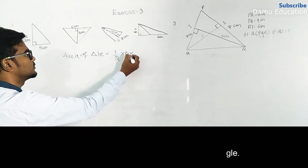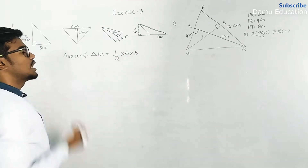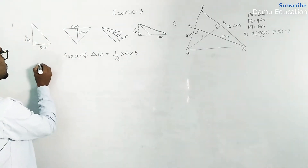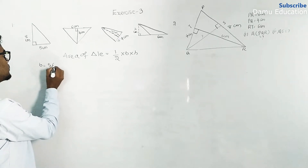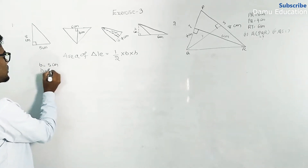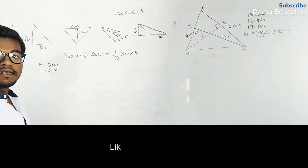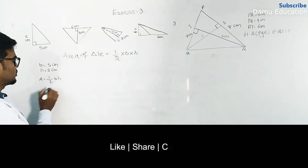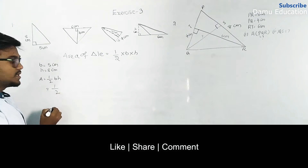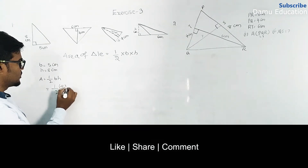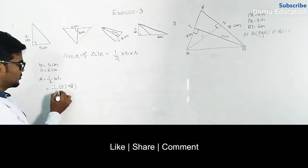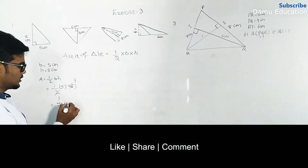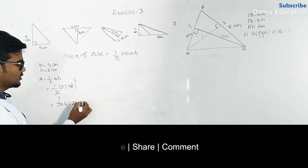For the first triangle, base is equal to 5 centimeters and height is equal to 8 centimeters. Area equals half into base into height, that is half into 5 into 8. Five into four equals 20 centimeters square.